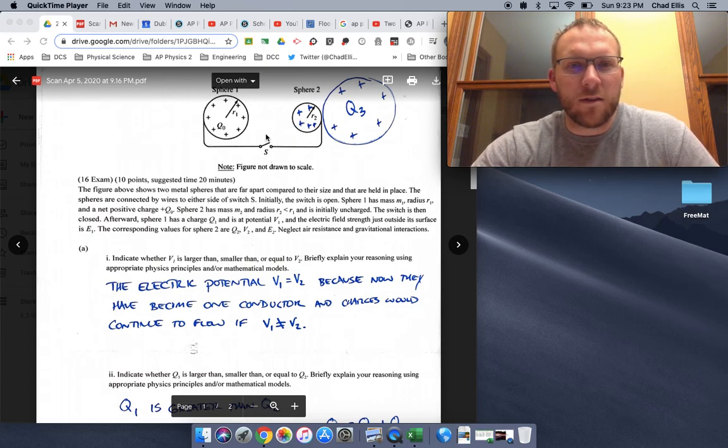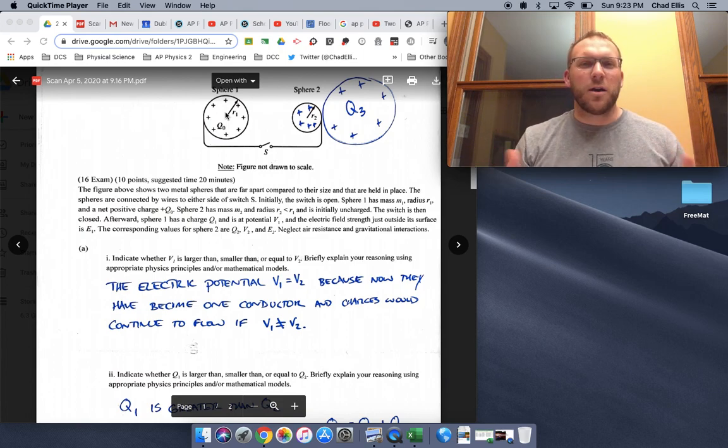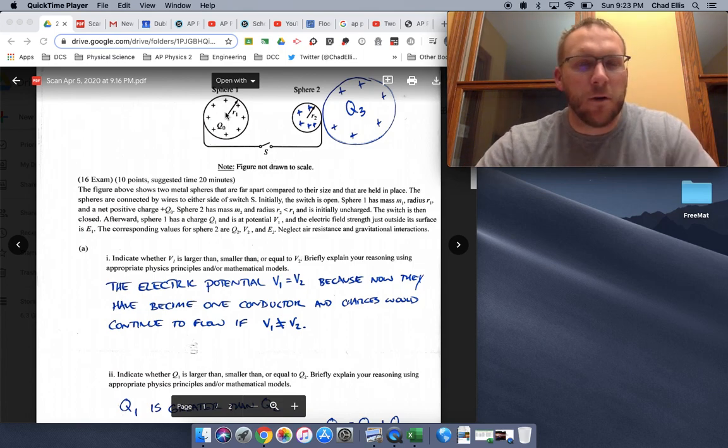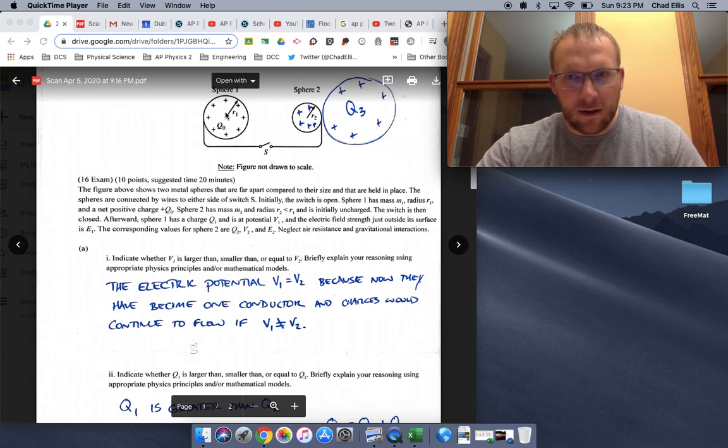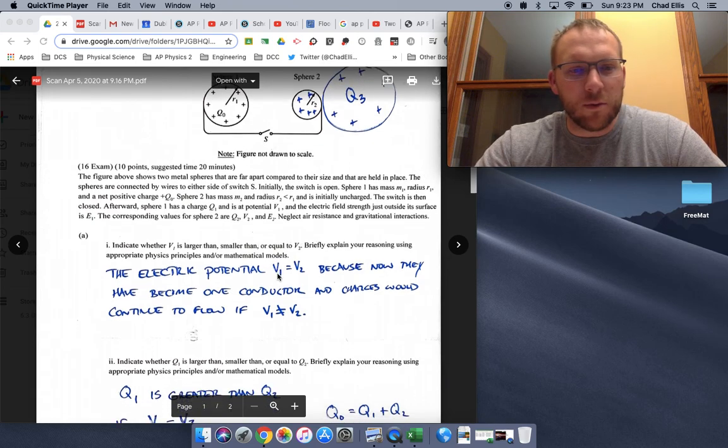If there wasn't the same electric potential, charge would still be trying to flow from one sphere to the other. If there's a potential difference, right, remember that's why charges actually flow. So for things to be static, for those charges to actually stop, the electric potential has to be the same at all positions. So that's how we get the idea that V1 equals V2.